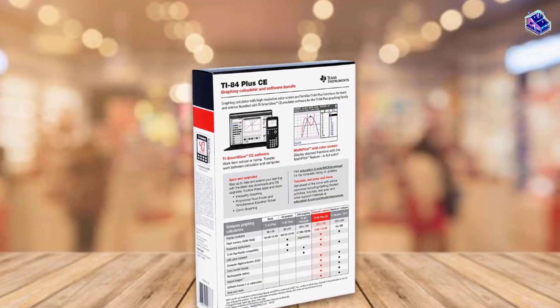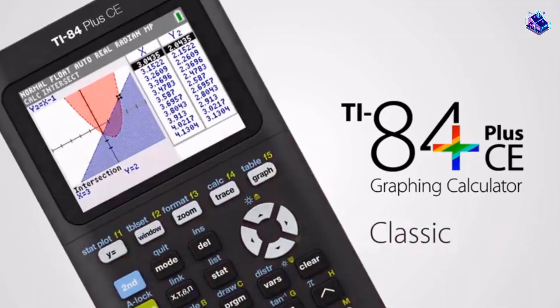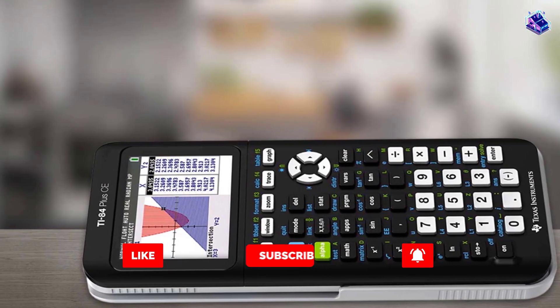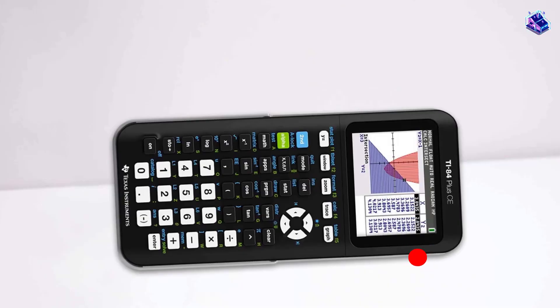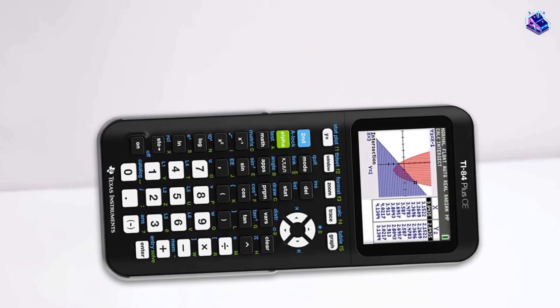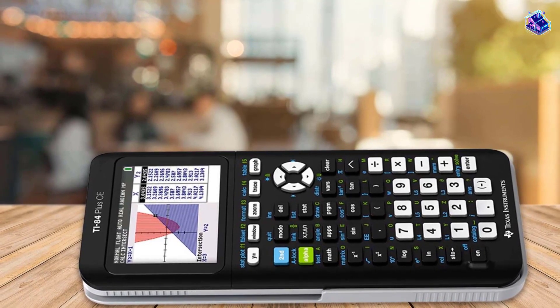Customers may receive Python version while supplies last. It comes with MathPrint for common math notation mode. The screen probably takes up a significant amount of the battery's juice. The TI-84 comes with a rechargeable battery and USB cable to save you money on replacement batteries.